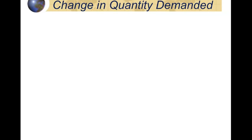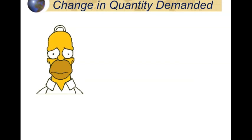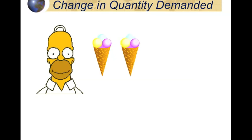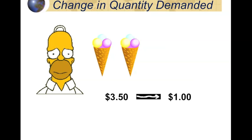Let's look at an example of the change in quantity demanded using Homer Simpson. We know Homer definitely likes to eat. So, ice cream cones: when ice cream cones are priced at $3.50, Homer will consume two per week. Now, what happens when the price falls? Well, now Homer can afford to buy more, and so he does — he buys more ice cream cones.